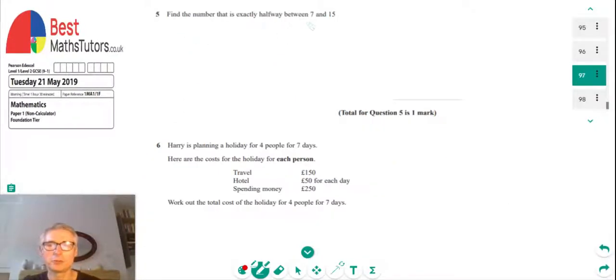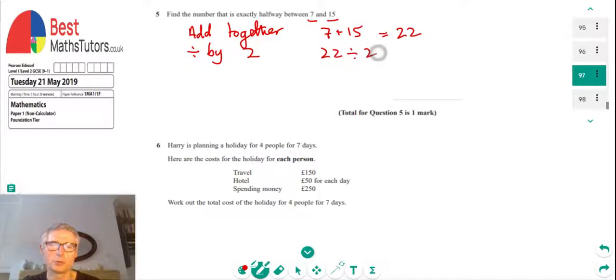Question 5, we've got to find a number that's exactly halfway between 7 and 15. The easiest way to do this is add them together and divide by 2. So if we do that, add them together, 7 plus 15 will give us 22. And then if we divide 22 by 2, what we'll get is 11. So that's the number that's exactly halfway between 7 and 15.